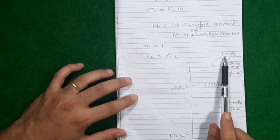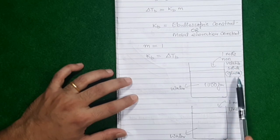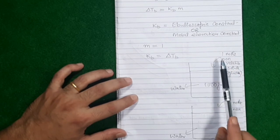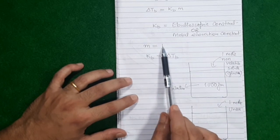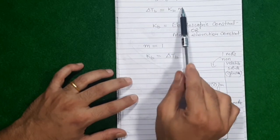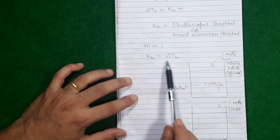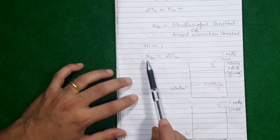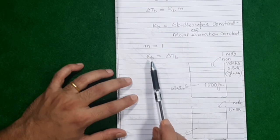The ebullioscopic constant is the rise in boiling point when you've added 1 mole of glucose. The boiling point of water won't stay at 100 — because you've added impurity and prepared a solution of molality 1, the boiling point will rise. Let's say it rises to 102 degrees Celsius. So the elevation of boiling point is 2 degrees, and this reveals the real meaning of Kb.